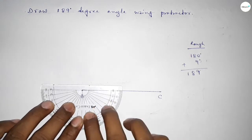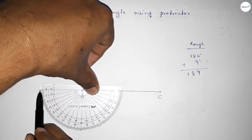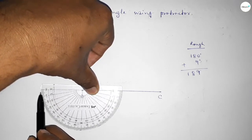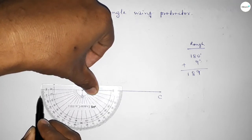So putting the protractor on the point B by this way, and this is 180 degrees. So this is 1, 2, 3, 4, 5, 6, 7, 8, 9. So by adding 9 degree angle with 180 degree, then we can get 189 degree angle.